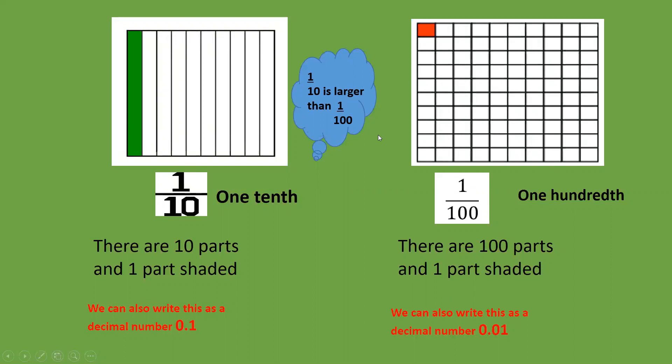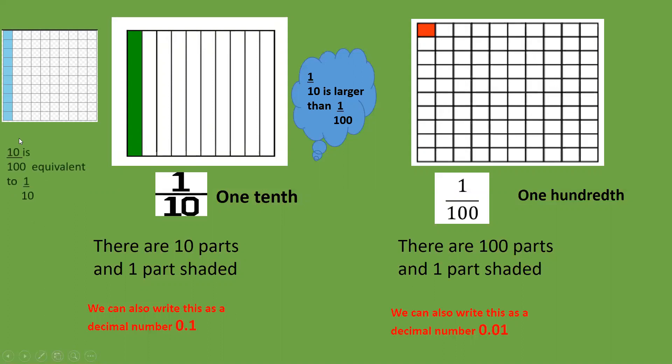We know, just by looking at our diagrams, that one tenth is a larger fraction, a larger amount, than one hundredth. If we look at our hundred square again, we can see that if we shaded in ten squares, ten over a hundred is equivalent to one tenth. It's written differently, but it's the same amount.